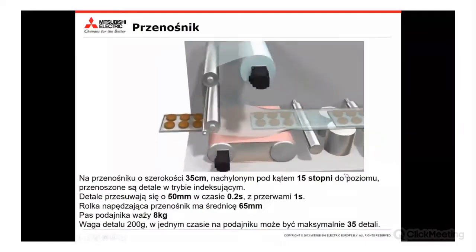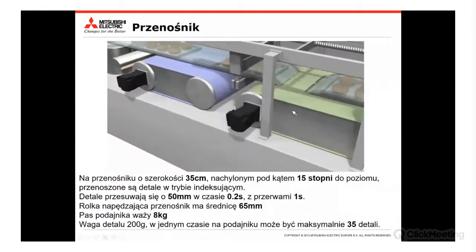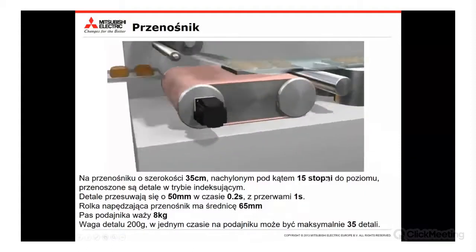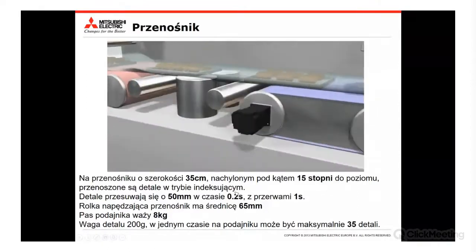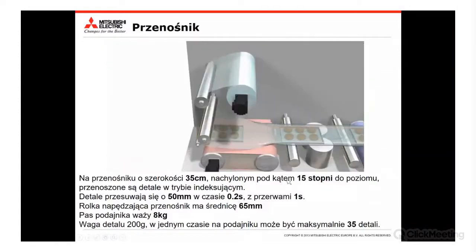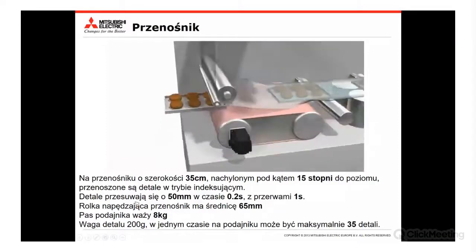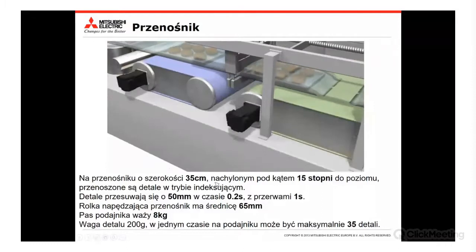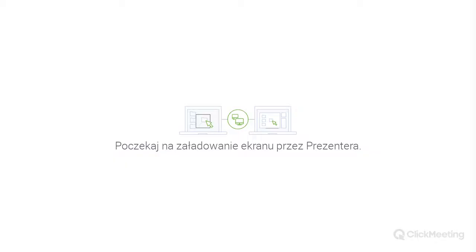Przejdziemy do przykładu drugiego – przenośnik taśmowy. Parametry: szerokość przenośnika 35 mm, kąt nachylenia 15 stopni. Cykl pracy: przesunięcie o 50 mm w czasie 0,2 sekundy z przerwami wynoszącymi jedną sekundę. Rolka napędzająca ma średnicę 65 mm, pas podajnika waży 8 kg, waga pojedynczego detalu to 200 g i maksymalnie 35 detali jednocześnie. Standardowa aplikacja – przejdźmy do obliczeń.